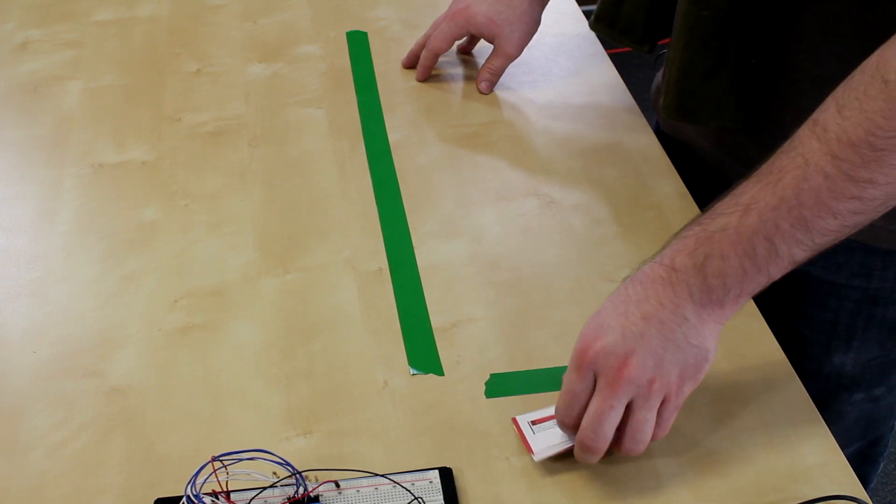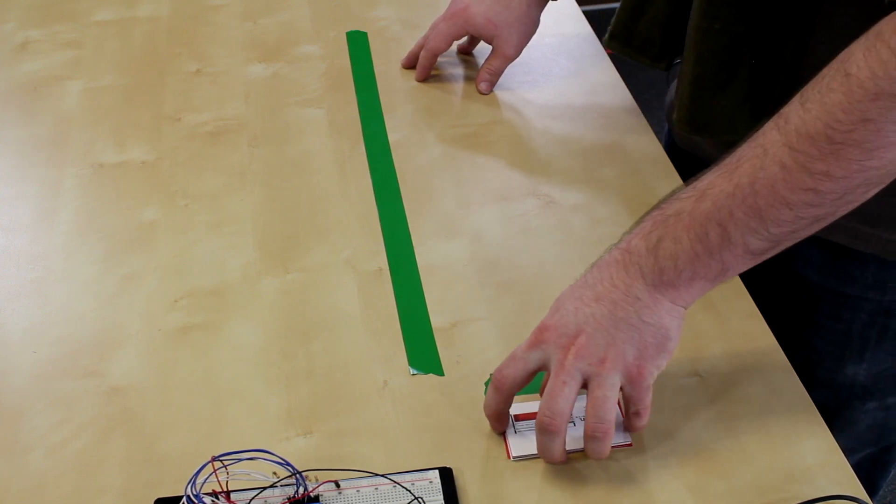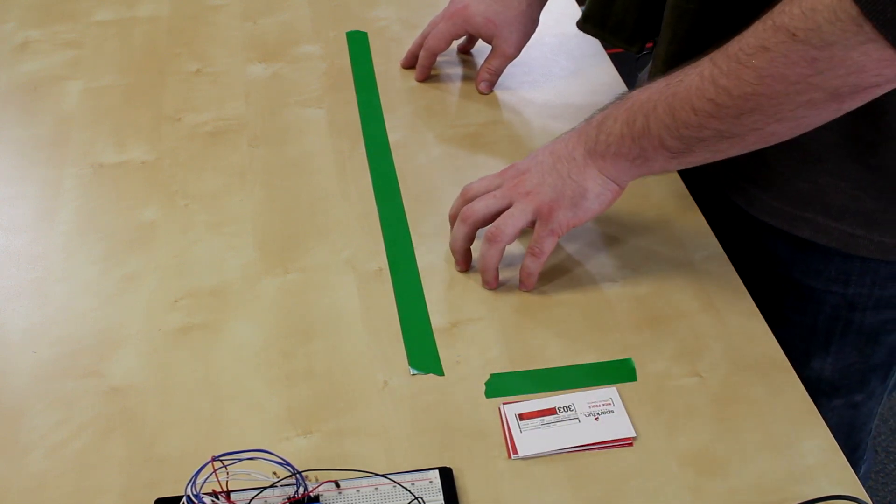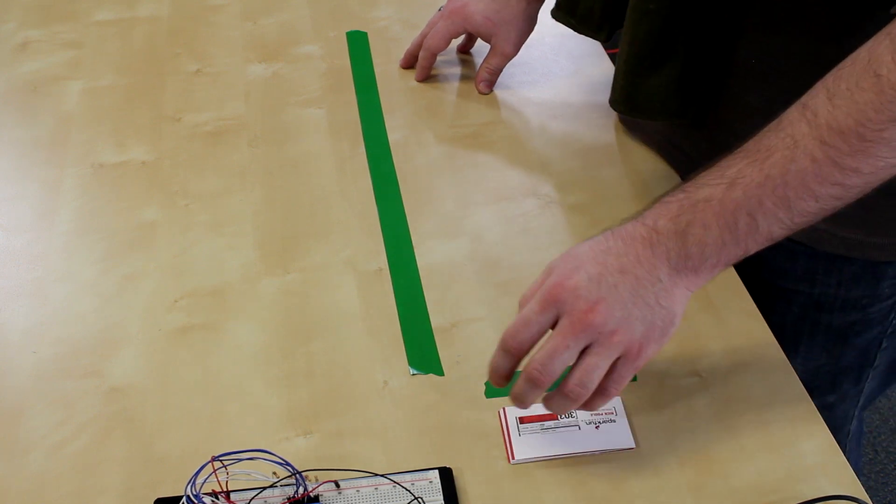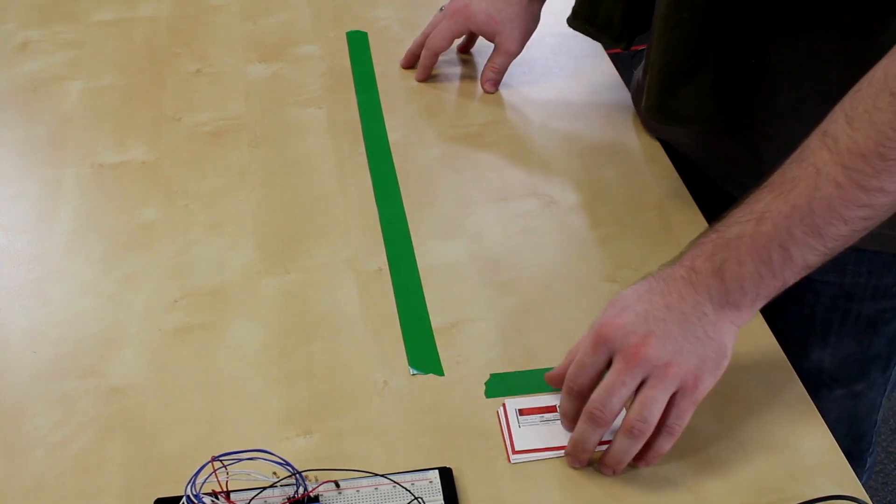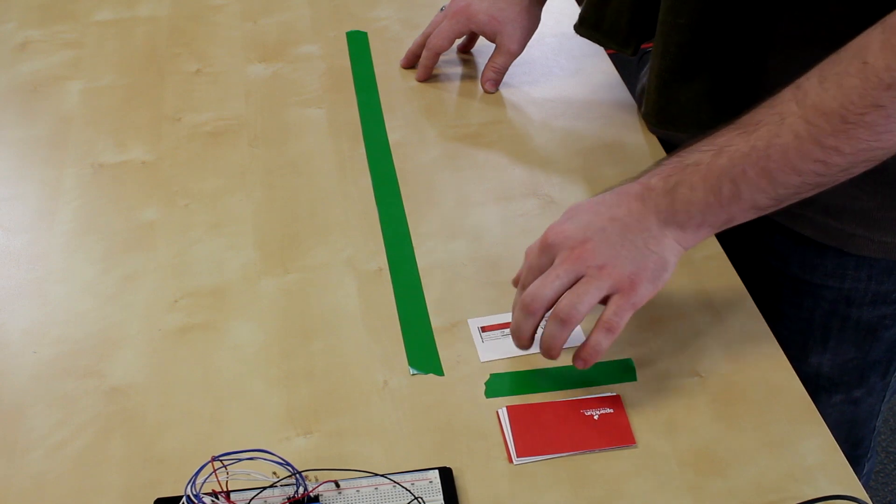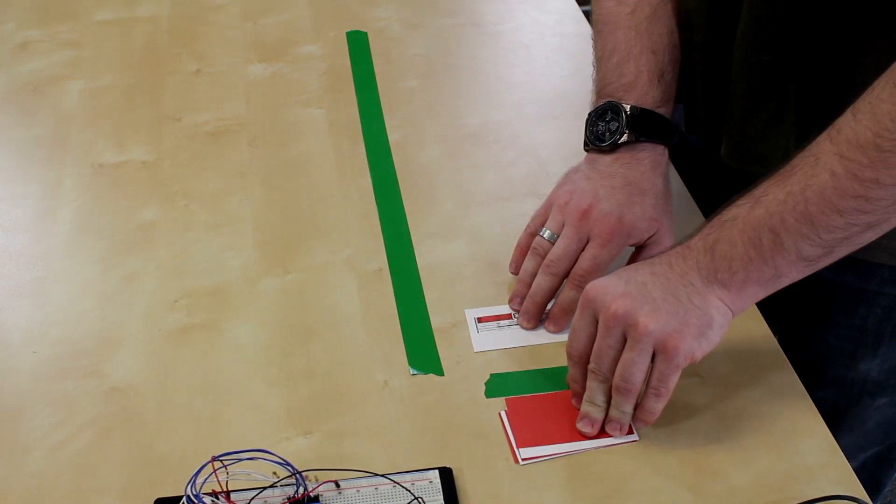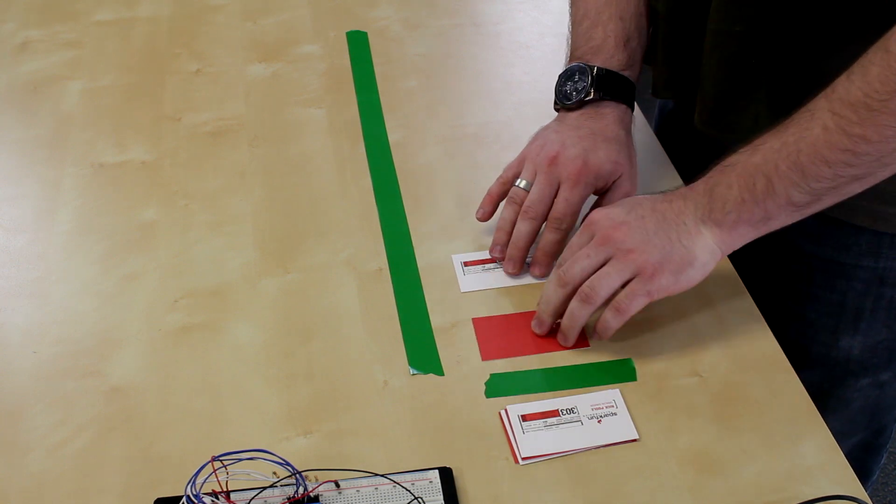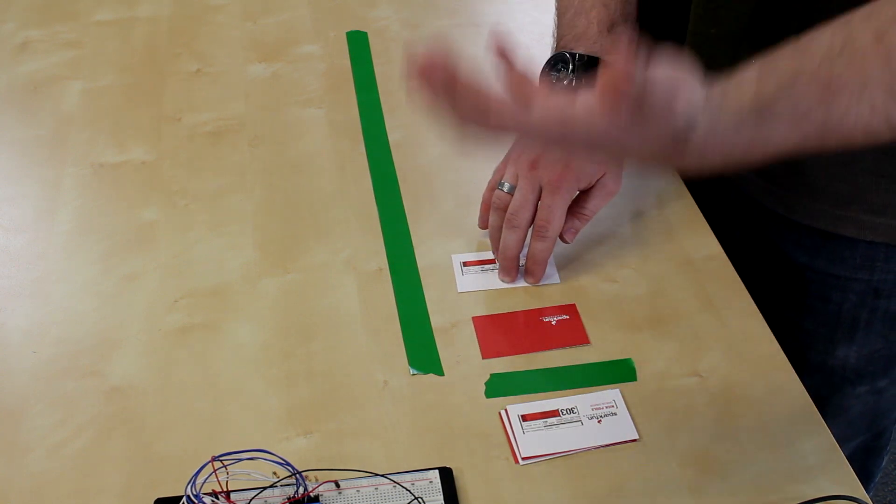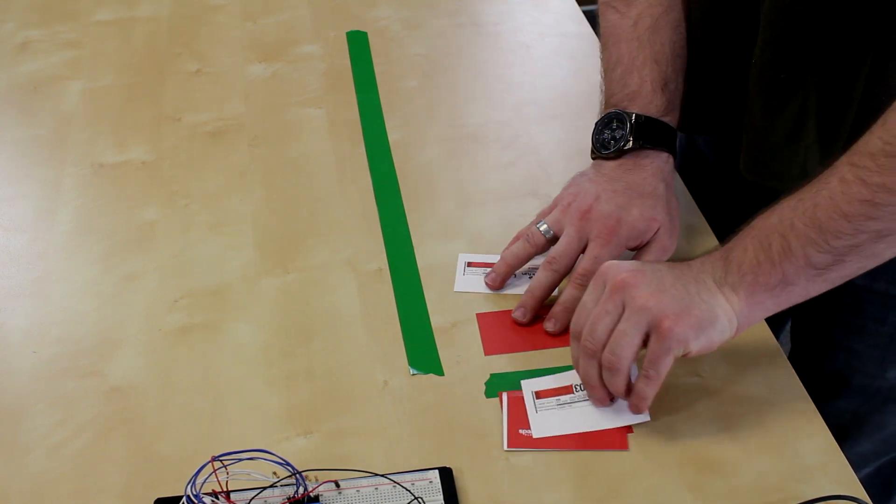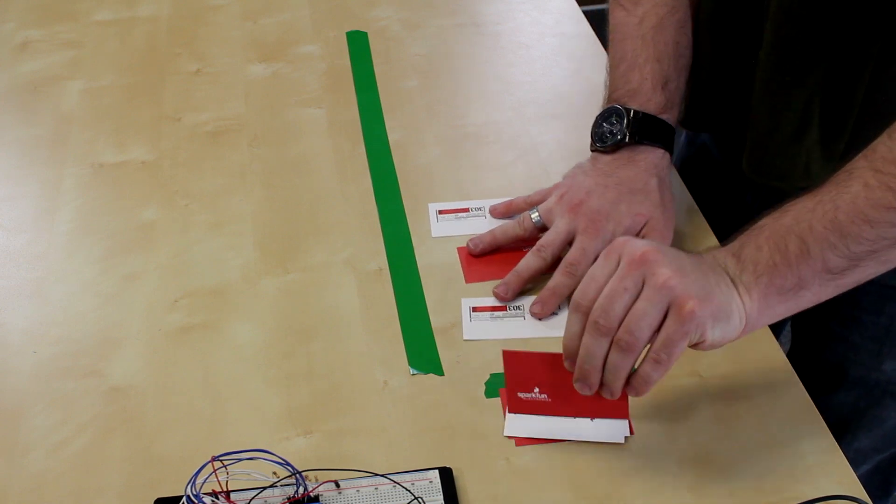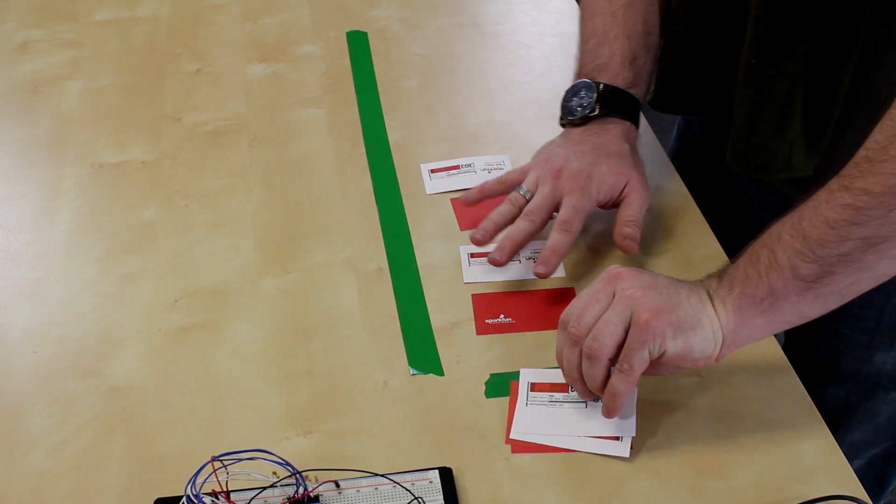Now, imagine that the stack of business cards is the serial data waiting to be shifted into the register. When we move the clock pin up and down, what we're actually doing is we're shifting each of these in. So you get one bit, and then when you shift another one in, it moves over one space and allows you to shift another bit into place. And you do that several times, and they shift in one at a time,